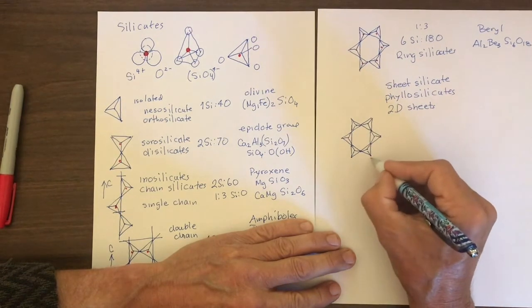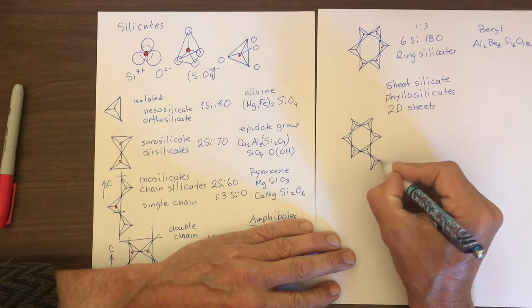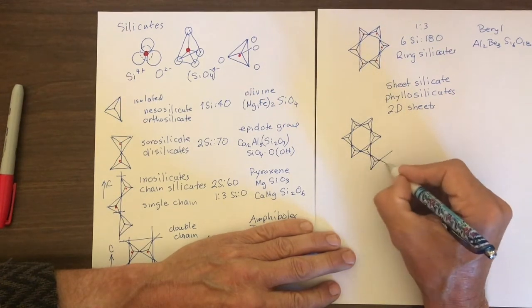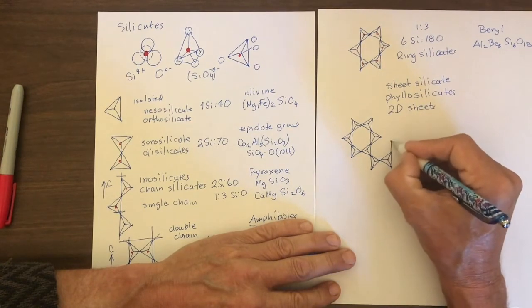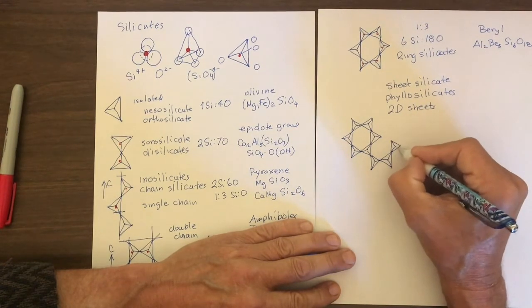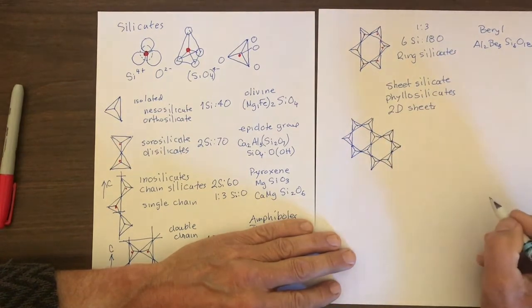So now this line here goes down and we have another tetrahedra. And then over here, another tetrahedra. And then over here, another tetrahedra. And here.